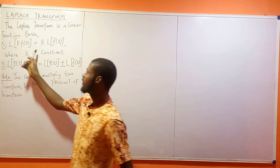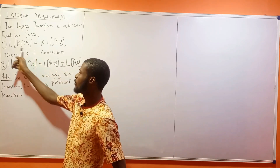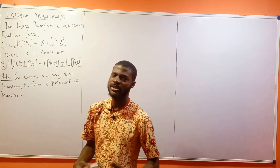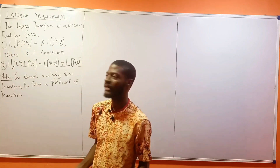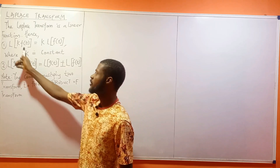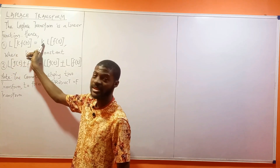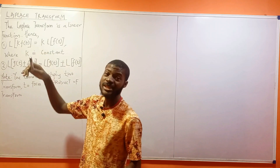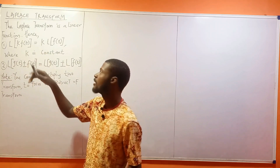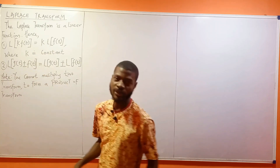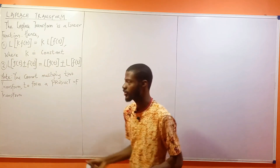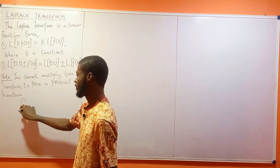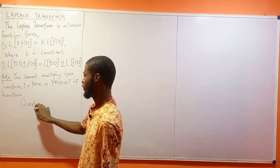What if you are finding the Laplace transform of a function multiplied by a constant — say 2, 3, 4, 5, 6? Your result is: factorize out the constant and take the transform of the function. So let us look at a few questions.